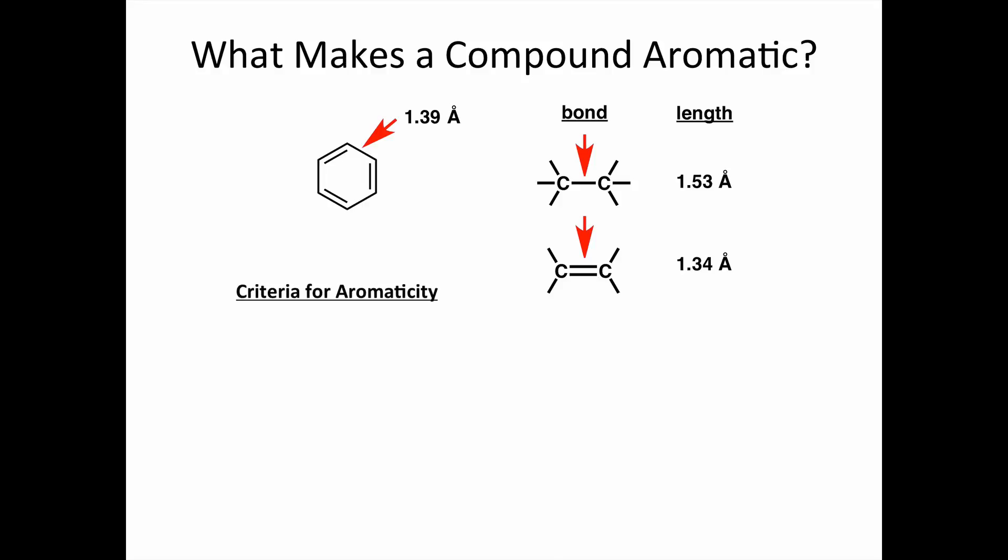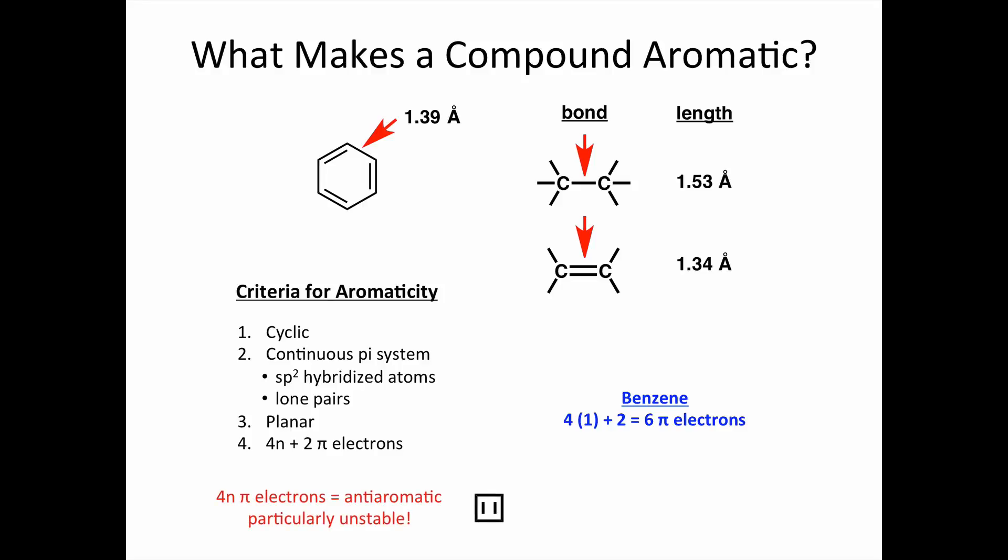To be aromatic, a cyclic compound must have a continuous pi system and be planar. It must also satisfy Huckel's rule, having 4n plus 2 electrons in the pi system, where n is 0 or a small positive number. Now, compounds that contain 4n electrons in the pi system are particularly unstable and are referred to as anti-aromatic.